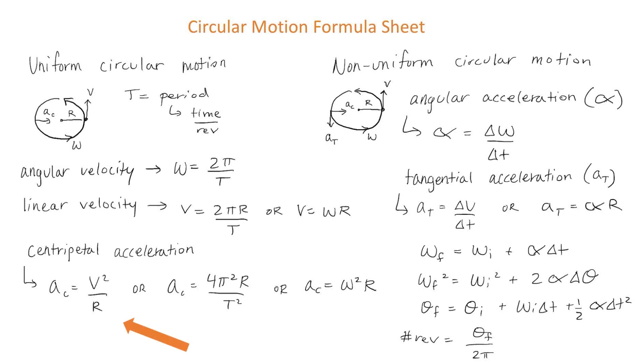Centripetal acceleration can be calculated using the equation v squared divided by r, or 4 pi squared times r divided by t squared. Or you can also use omega squared times r. The reason there are so many equations for centripetal acceleration is because I plugged in the different velocity values. Centripetal acceleration has the units of meters per second squared.